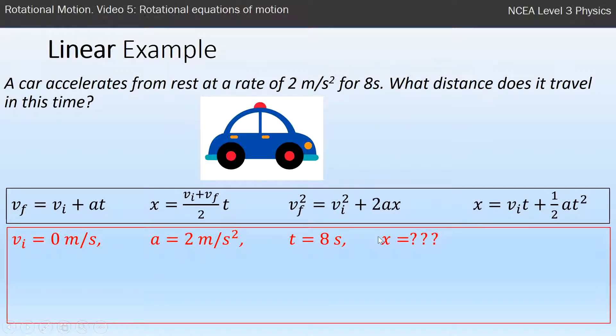What distance does it travel? So we want to know the distance or displacement. We look for a formula that has those four variables in it, and it's obviously the last one. Then we just substitute in, rearrange if necessary but not in this case, substitute our numbers in, and we get an answer of 64.